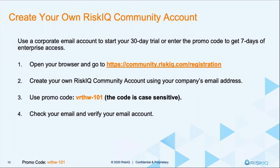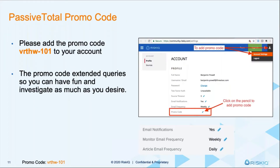The first thing you'll want to do is log into Passive Total and enter in the virtual threat hunting workshop promo code. You'll do that from your person icon in the upper right-hand corner. And it's case sensitive, so please make sure you type it correctly. Once you type it in and click out of that location, you'll automatically see your numbers pop up tremendously. This will give you API access and full access to all the data sets for seven days if you are not in a current trial.